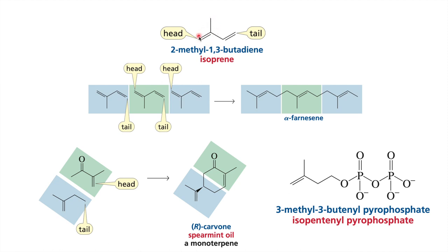In isoprene, the part near the methyl group is called the head part, and the other part is called the tail portion. The head of one isoprene unit joins with the tail of another isoprene unit to give a terpene. In this structure, tail of one isoprene combined with the head of another gives alpha-farnesene.